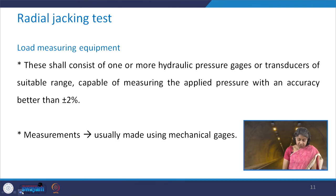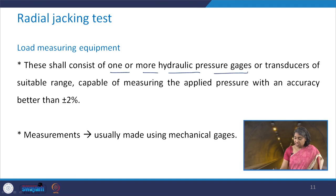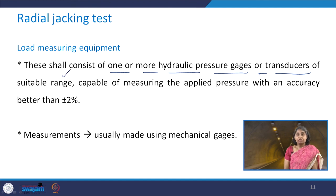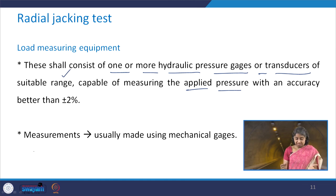Accordingly we need to choose the jacks. The load measuring equipment shall consist of one or more hydraulic pressure gauges or transducers of suitable range, capable of measuring the applied pressure with an accuracy better than plus or minus 2%. Measurements are usually made using mechanical gauges.